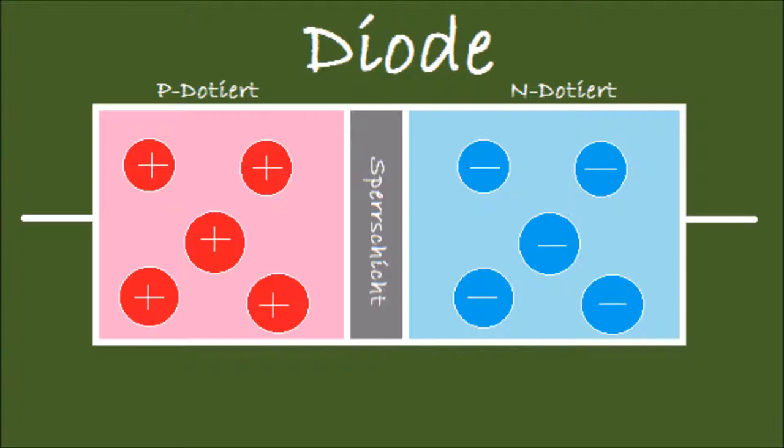In the positive doped layer, for example, you have to add material with one electron less on the outermost atom shell compared to the semiconductor material. One electron less means less negative charge because one electron is negatively charged. You can see the missing electron as a hole. Less negative charge means obviously more positive charge, and this makes this part positively doped.